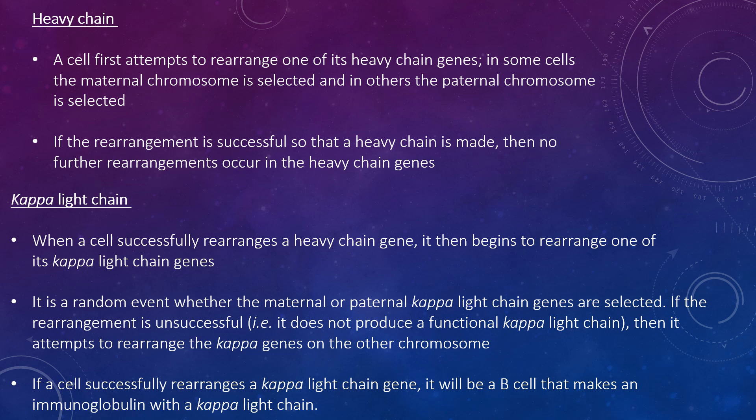A B-cell first attempts to rearrange one of its heavy chain genes; in some cells the maternal chromosome is selected, in others the paternal chromosome is selected. If the rearrangement is successful and a heavy chain is made, then no further rearrangements occur at the heavy chain genes. If the first attempt is unsuccessful, the cell attempts to rearrange the heavy chain genes on its other chromosome. If both attempts fail, the cell is destined to be eliminated. When a cell successfully rearranges the heavy chain gene, it then begins to rearrange one of the kappa light chain genes, randomly selecting the maternal or paternal chromosome. If the rearrangement is unsuccessful and does not produce a functional kappa light chain, it attempts to rearrange the kappa genes on the other chromosome. If a cell successfully rearranges a kappa light chain gene, it will become a B-cell that makes an immunoglobulin with a kappa light chain.